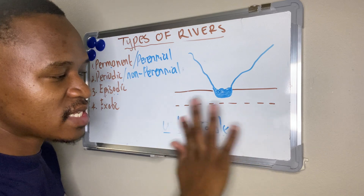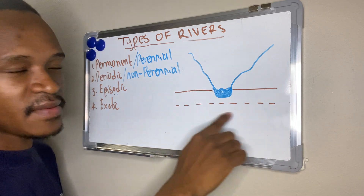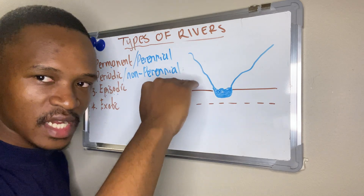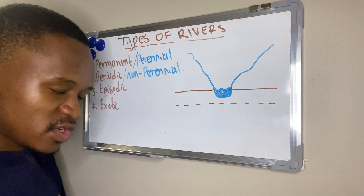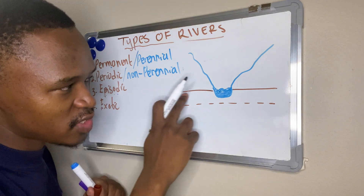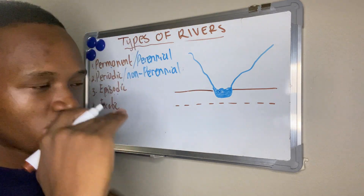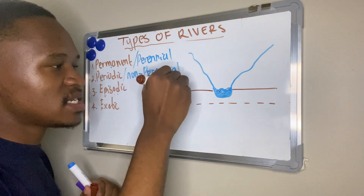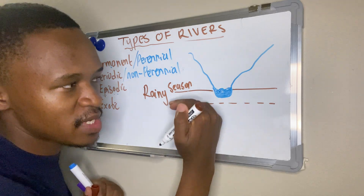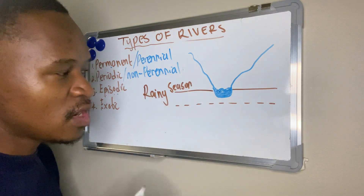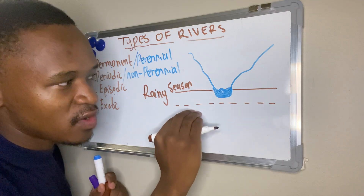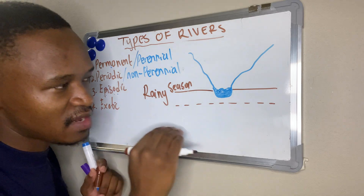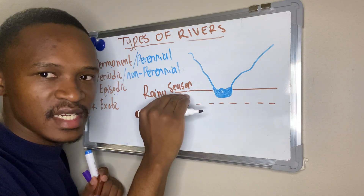You'll notice I have two lines — a solid line and a dashed line — representing the water table in two different seasons. The solid line represents the level of groundwater during rainy seasons. During rainy seasons, the groundwater level will be higher because there is more infiltration, more water going below the ground. So the water table will be higher during rainy seasons.